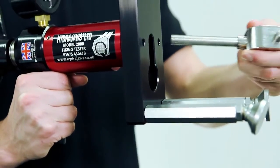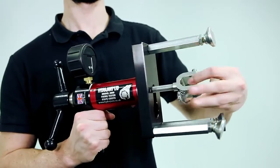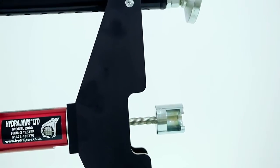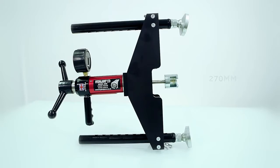For festive lighting applications, where a ring bolt is often located at the centre of a steel plate, we offer an optional 270mm load spreading bridge which provides the necessary width to span the plate.